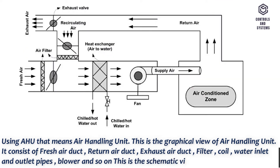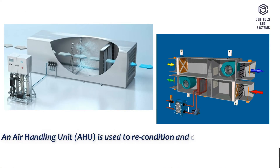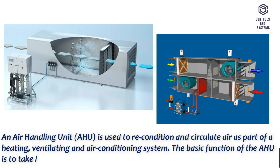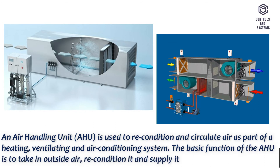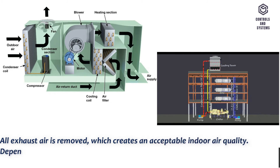This is the schematic view of the air handling unit. An AHU is used to recondition and circulate air as part of a heating, ventilating and air conditioning system. The basic function of the AHU is to take in outside air, recondition it and supply it as fresh air to a building. All exhaust air is removed, which creates an acceptable indoor air quality.